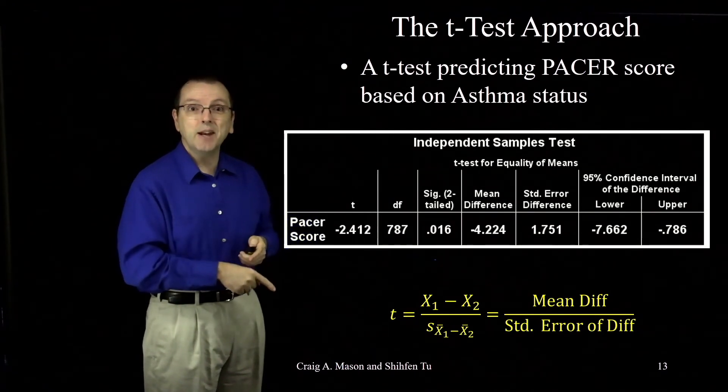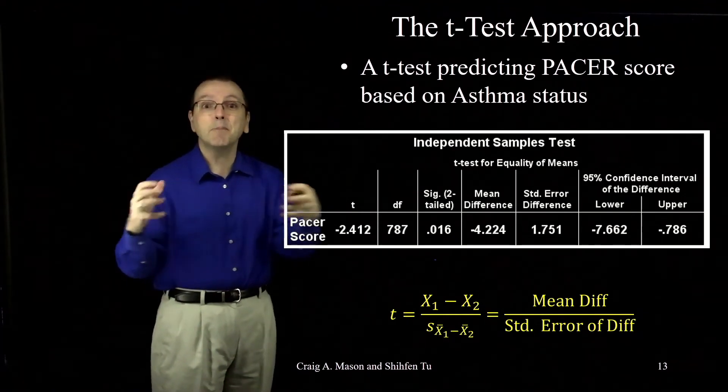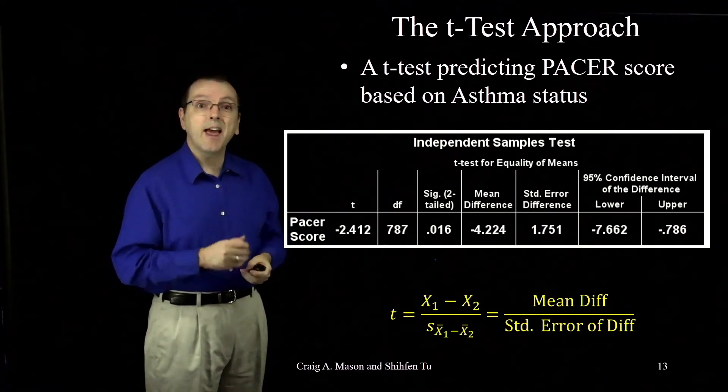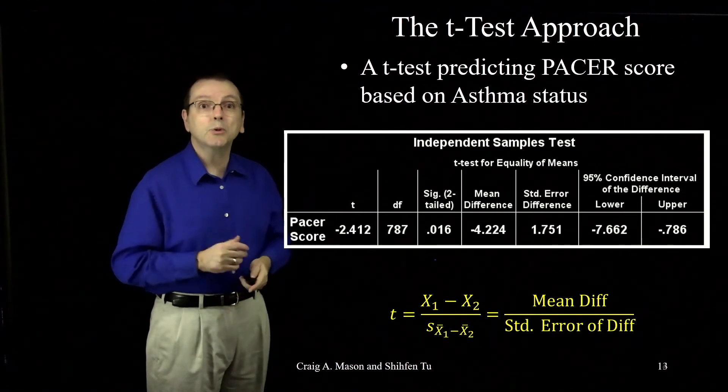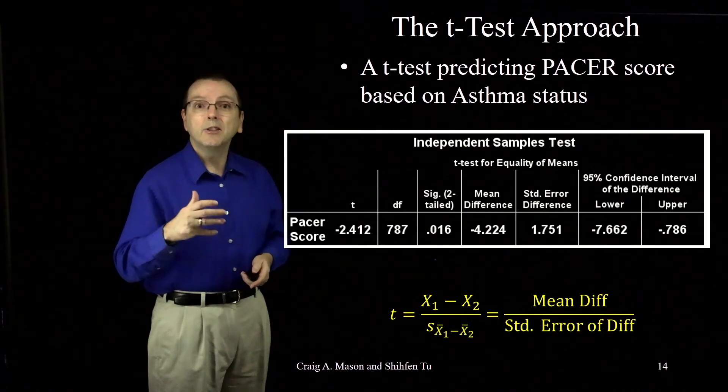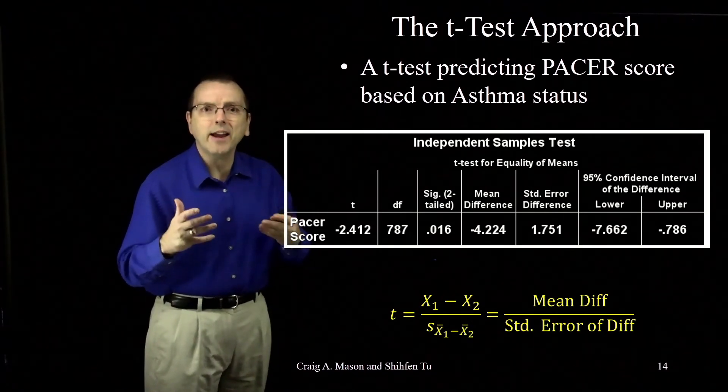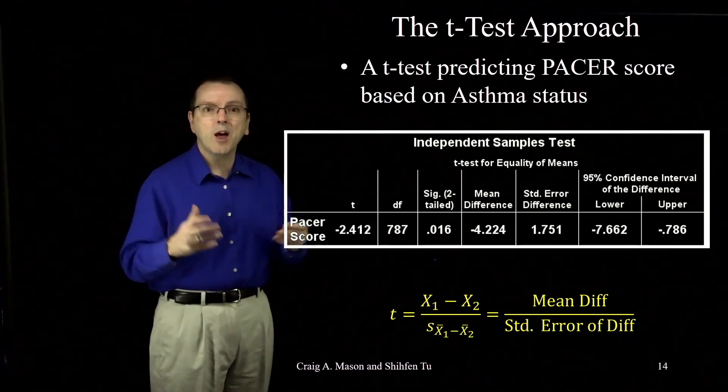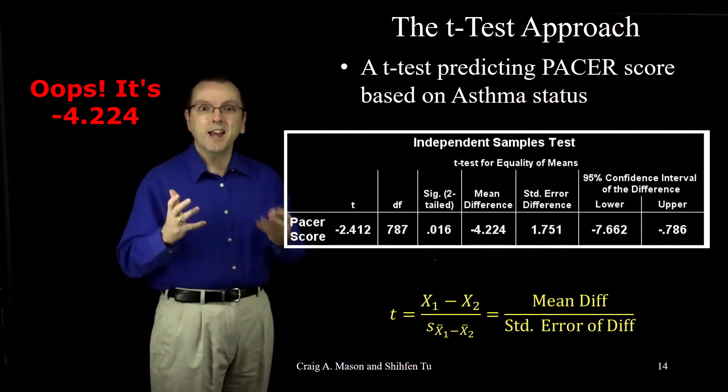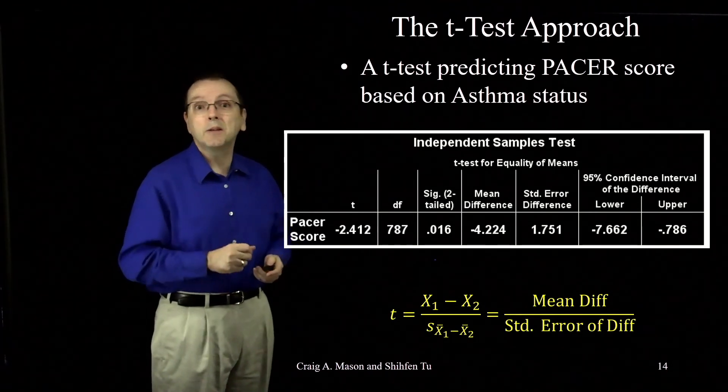It's the denominator in our t-score. That how big of a difference did I expect to see part? If we take the mean difference and divide by the standard error of the difference, we get our t-score. And the larger the t-score, the larger the difference is in a statistical sense, the less likely that we would have randomly stumbled on a difference of negative 4.224 in our sample means if the null were true and the means really were the same in the population.